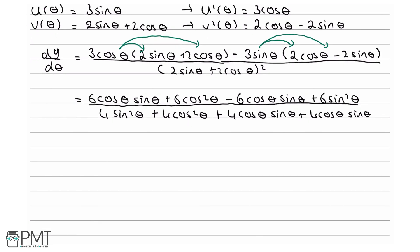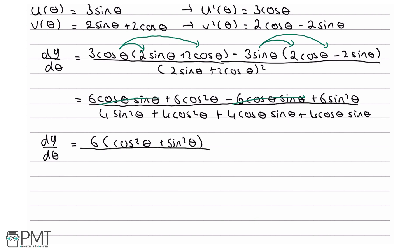The next step is to cancel what we can. The 6 cosine theta sine theta and minus 6 cosine theta sine theta cancel out. We are left with dy/dθ equals 6 times (cosine squared theta plus sine squared theta), all over 4 times (cosine squared theta plus sine squared theta) plus 8 cosine theta sine theta — taking out factors of 6 and 4 respectively.